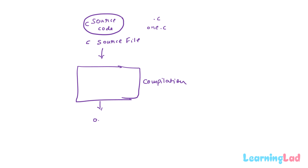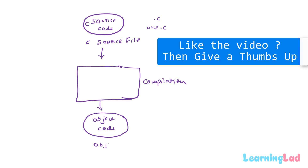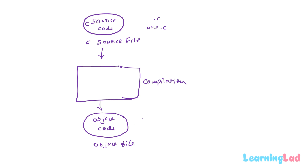The machine code generated by the compilation process is also called object code. The compilation process takes the source code written in C and generates a new file containing the machine code representation — this file is called the object file. In a Windows environment, the object file has a .obj extension, and in Linux or Unix it has a .o extension.